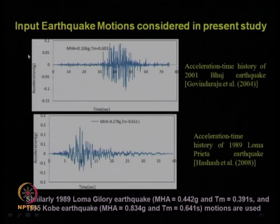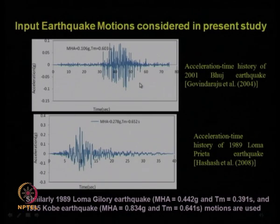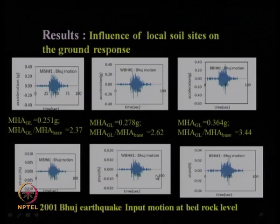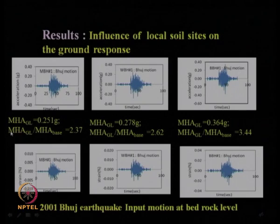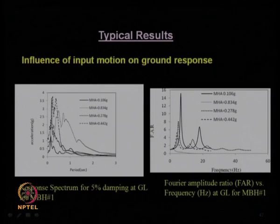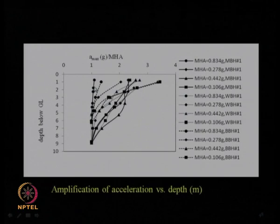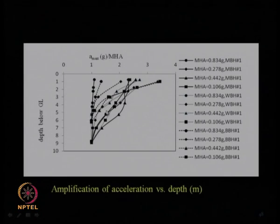Once the analysis is done, the input earthquake motion must be provided. We used the Bhuj earthquake motion as well as Loma Prieta and Kobe earthquake motions for ground response analysis. The outputs were obtained for different borehole locations at different levels — including the amplification from bedrock level to ground surface, the spectral acceleration response, and the Fourier acceleration spectra versus frequency curve for different borehole data. The depth-wise variation of amplification was also discussed in an earlier module.